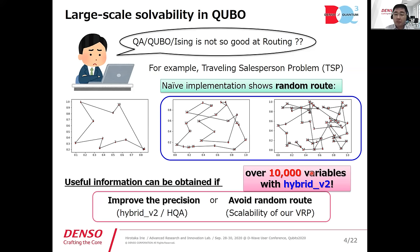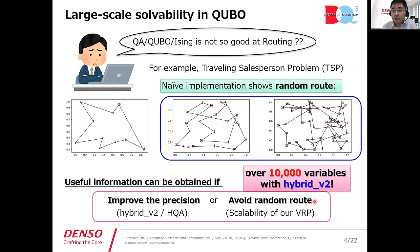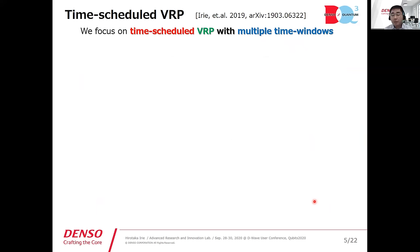It's also very interesting that Hybrid V2 is now available for over 10,000 variables. Whether we can solve the QUBO VRP with such a large system is one of the questions we will answer today. The problem we consider is a time-scheduled VRP with multiple time windows.